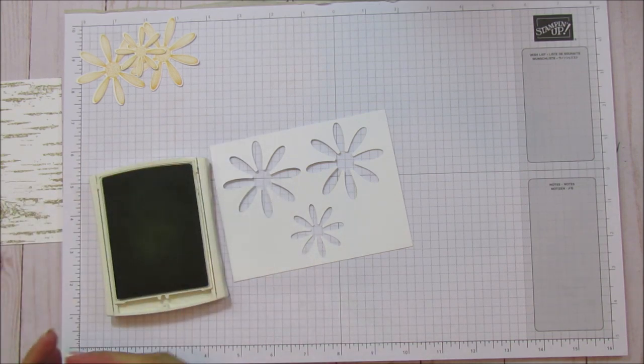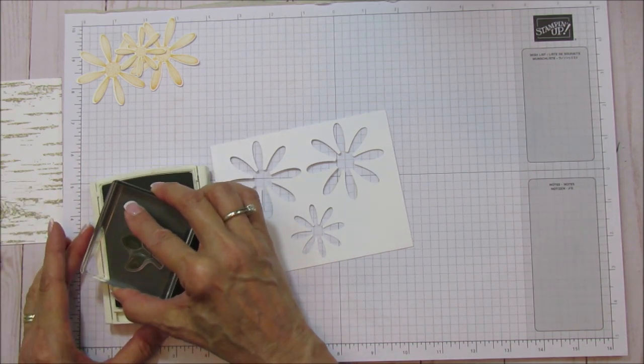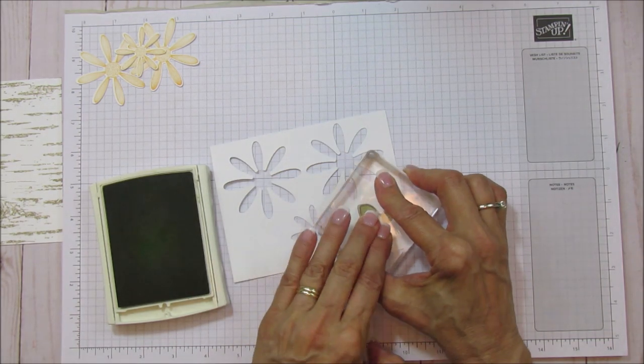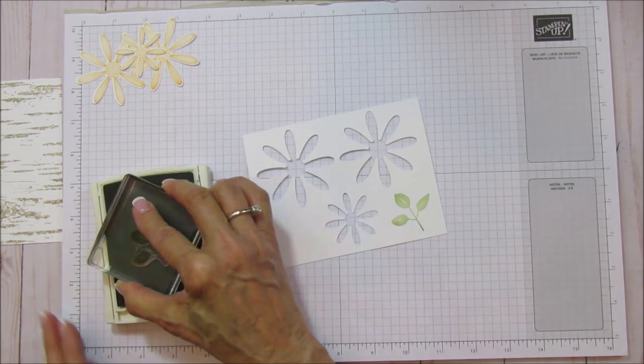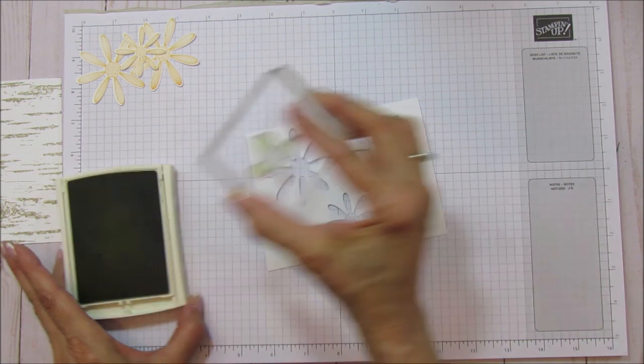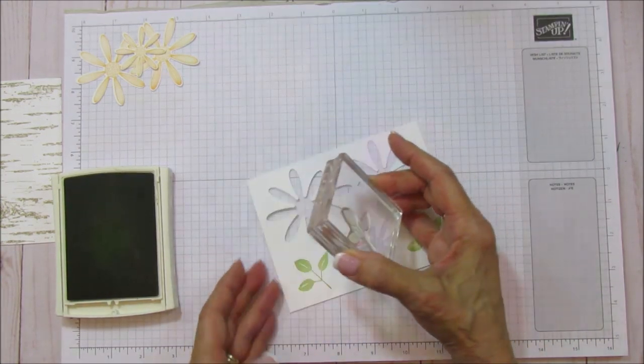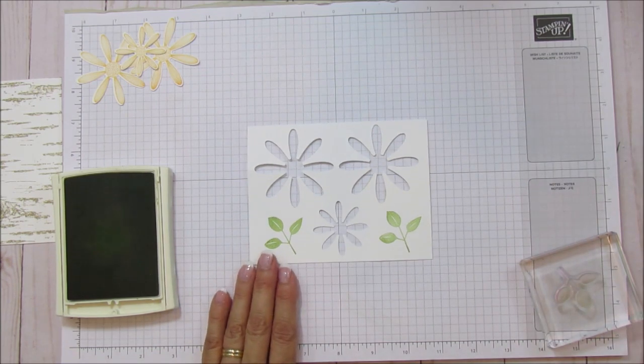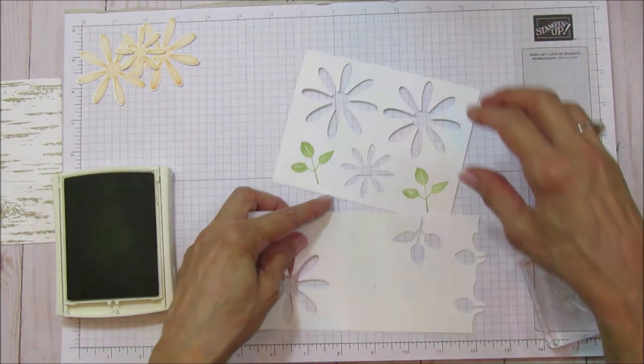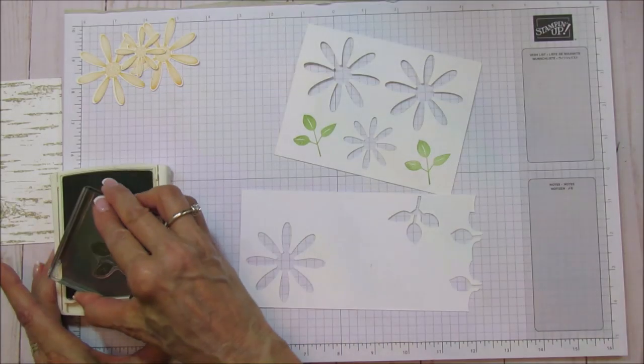So we're going to use Pear Pizzazz. And we're going to grab the leaves. That's why we don't waste anything. And I do need four things of leaves. So I'm going to have to grab me another little piece of Whisper White here. And we'll just use the one that we already used for this.